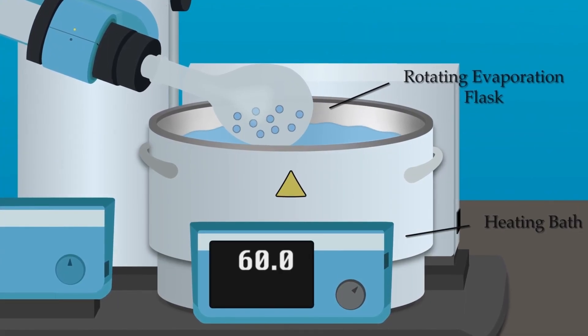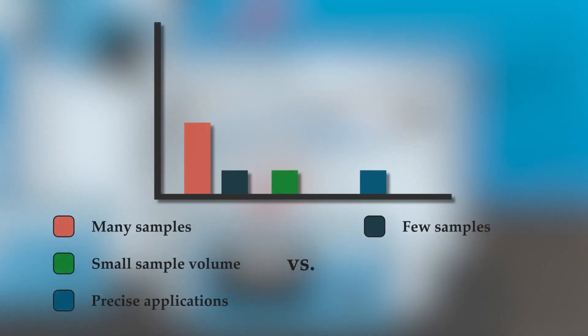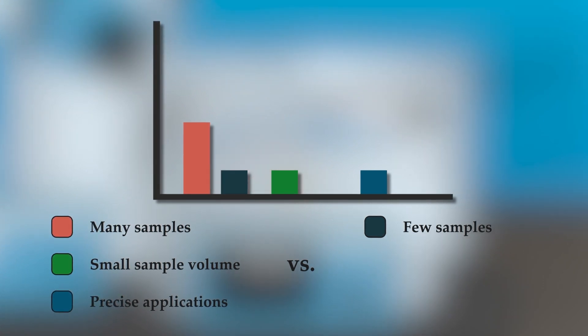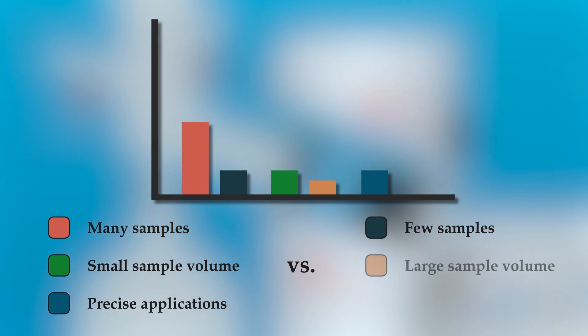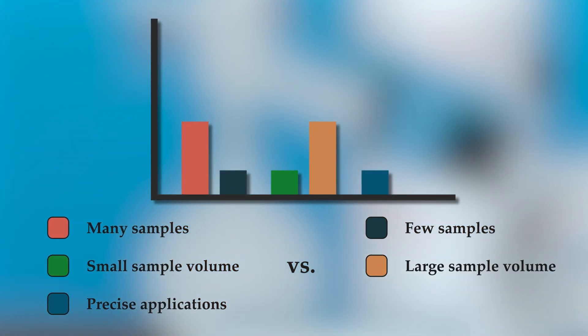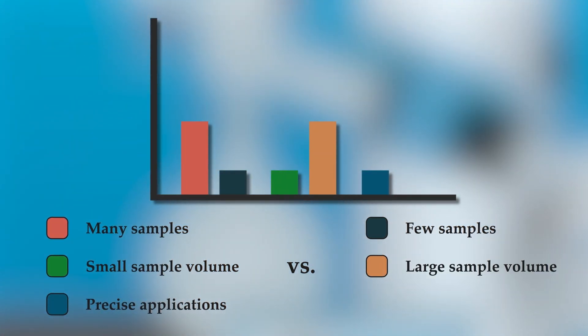Rotary evaporation is ideal when working with a very small number of samples. Since these units can only handle one sample at a time, they would not be an ideal choice for evaporating large batches. This method is also meant to handle large volume samples. Most rotary evaporators can handle sample volumes up to two liters.